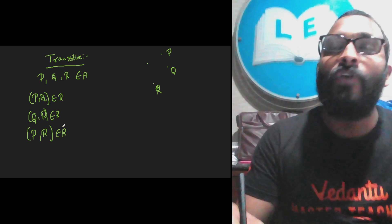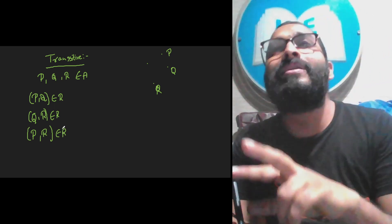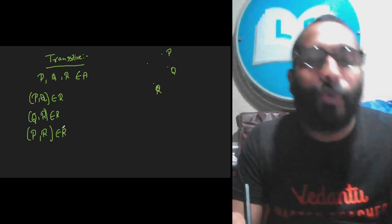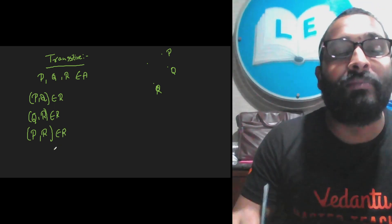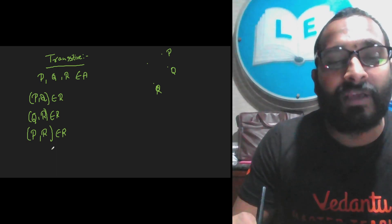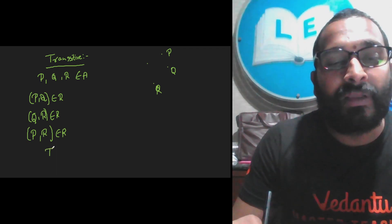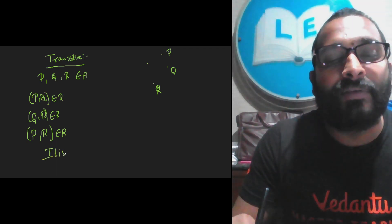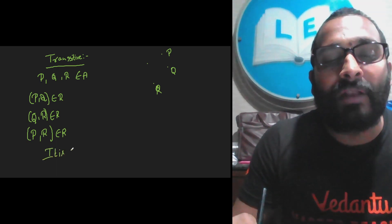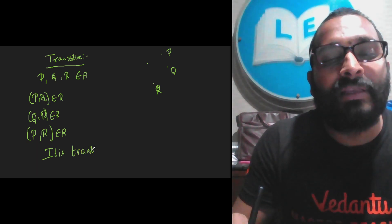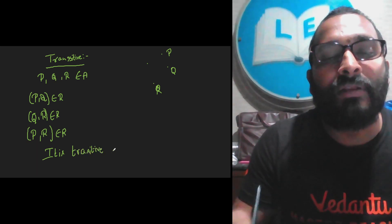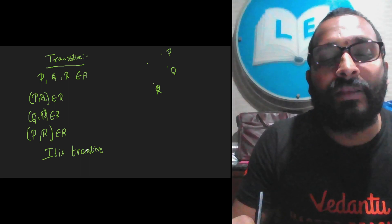Yes, because if P and Q are at the same distance and Q and R are at the same distance, obviously P and R should also be at the same distance from the origin. So it is transitive — it is a transitive relation.